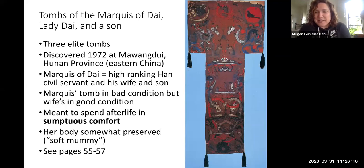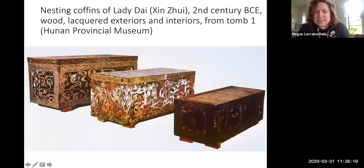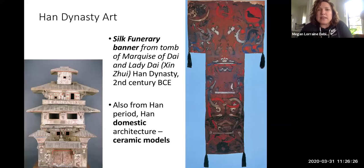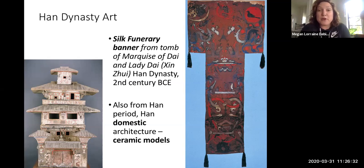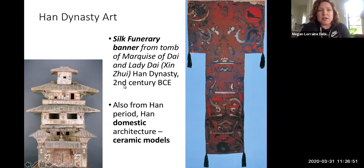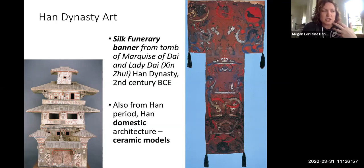Let's continue our discussion of early Chinese art. I think we left off at the end of last class with the funerary banner of Lady Dai. This wealthy family during the Han Dynasty was buried in a really elaborate entombment from the second century BCE — a long time ago. We're still in that time period when most of what we'd call art are objects found in tombs.